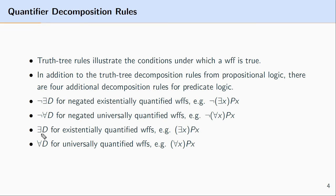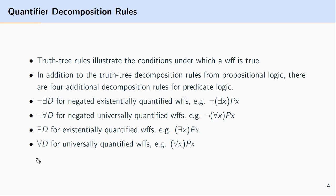The final predicate logic decomposition rule is universal decomposition, and by now you might be seeing a pattern. Universal decomposition, abbreviated with the upside-down A for the universal quantifier, applies to universally quantified well-formed formulas — that is, formulas where the main operator is the upside-down A. If you see a formula where the main operator is the universal quantifier, you apply the universal decomposition rule.